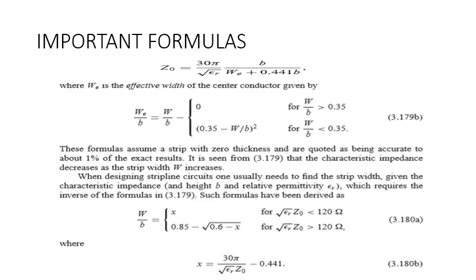The characteristic impedance is given by the formula: Z₀ = 30π / (√εᵣ · (w_e/b + 0.441·b)), where b is the distance between the substrates and w_e is the effective width. The effective width w_e/b is divided into two classes: w/b greater than 0.35 and w/b less than 0.35. When a problem is given, you must first find which category it falls into — students often make the mistake of not checking this. There is a difference of (0.35 − w/b)² so be careful.